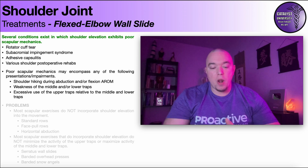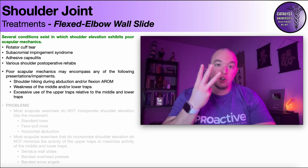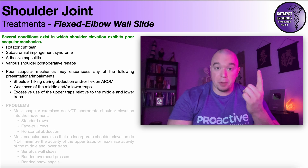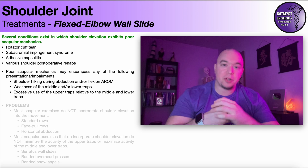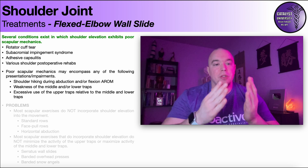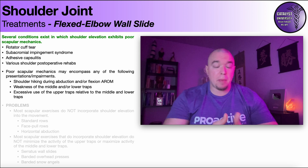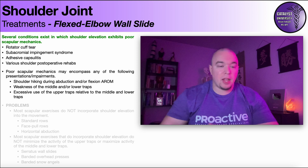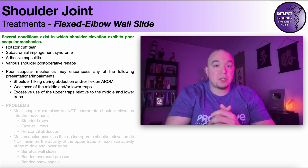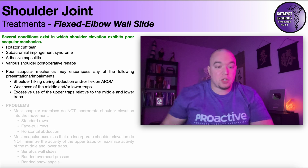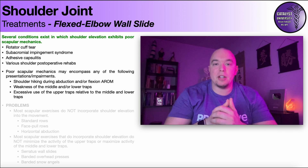When you upwardly rotate the scapula — which is what happens during shoulder elevation — there's a force couple that occurs between three major muscles of the shoulder girdle: the upper traps, the lower traps, and the serratus anterior. Those are your three primary upward rotators of the scapula. In particular, if the lower traps and serratus anterior are weak, that puts a huge reliance on the upper traps. Even if the upper traps are weak, what you'll observe is not just upward rotation but scapular elevation, because the upper traps' other function is scapular elevation — that's why you see that shoulder hiking.